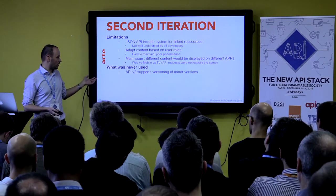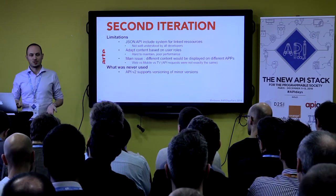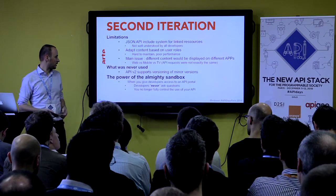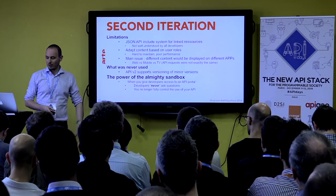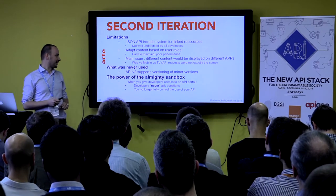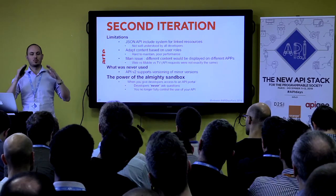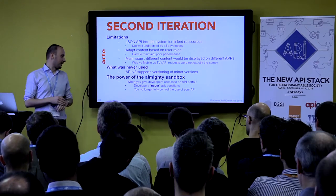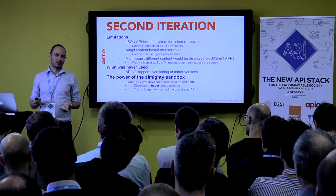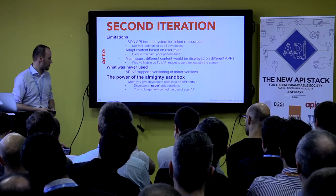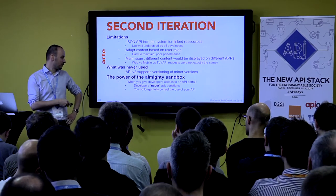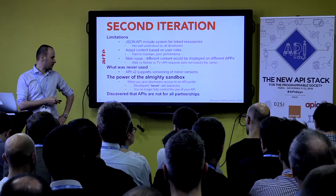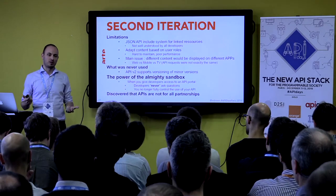We never used versioning for minor versions because we never make breaking changes in minor versions — we only add stuff, never break anything. We also learned the power of the sandbox: once you get a developer portal working, developers never ask any questions, they just go freestyle. We had our log stack to monitor what was going on. We also discovered that APIs do not work well for every partnership — it depends on the level of technology of your partner and the interest they have in working with you.